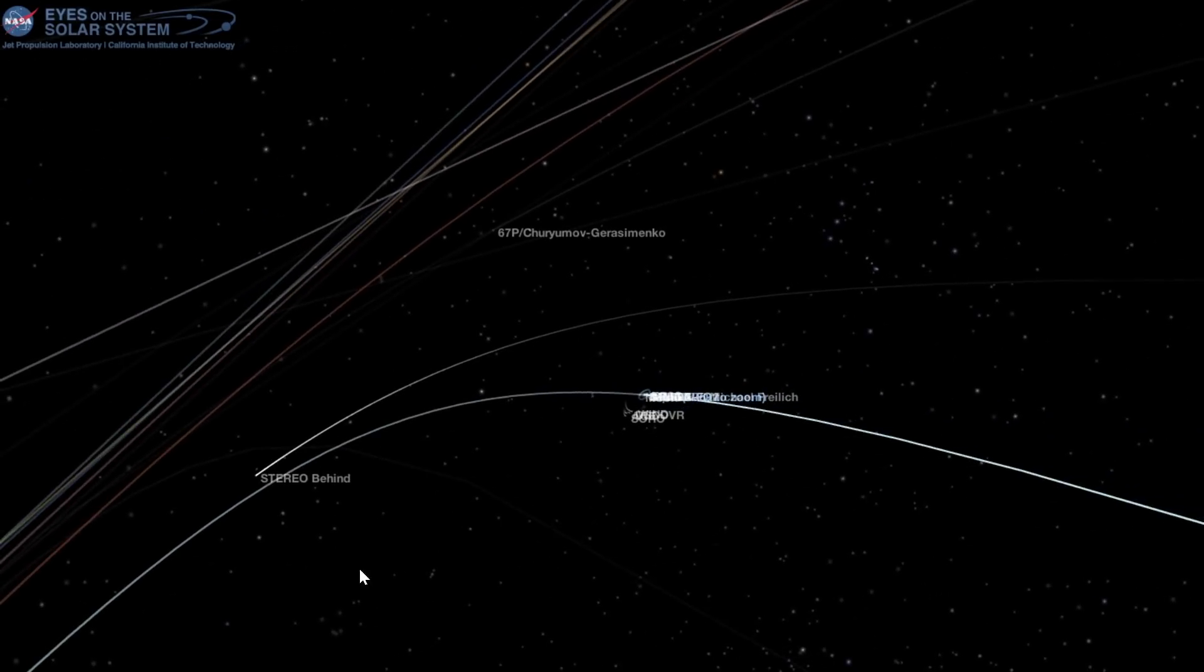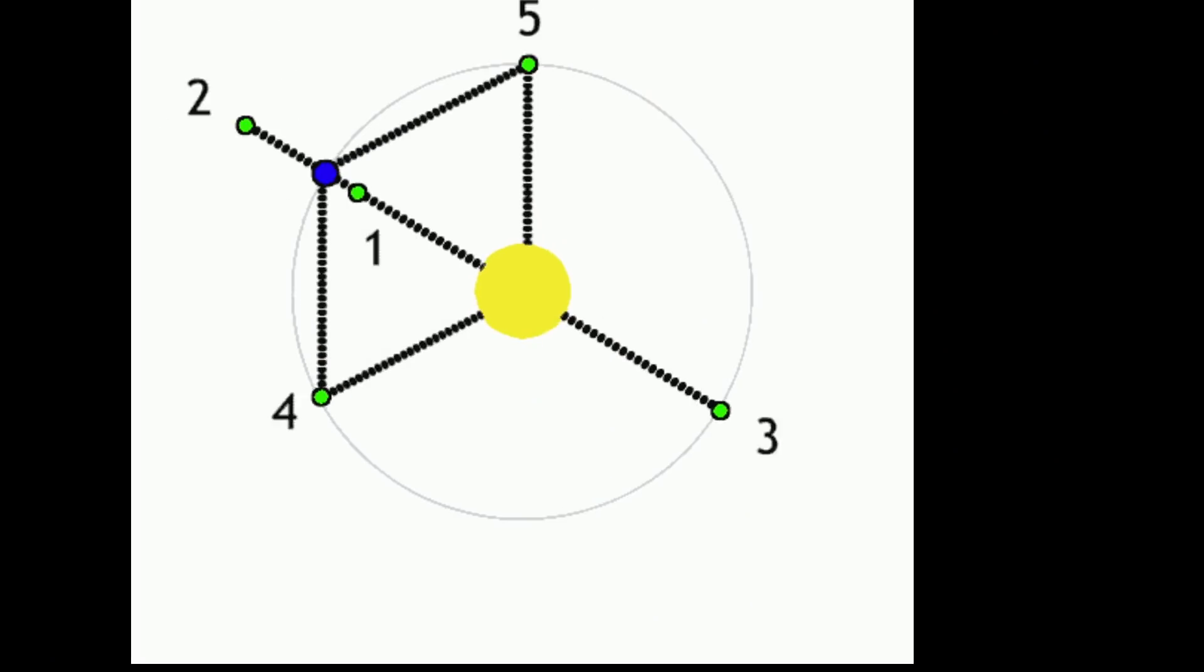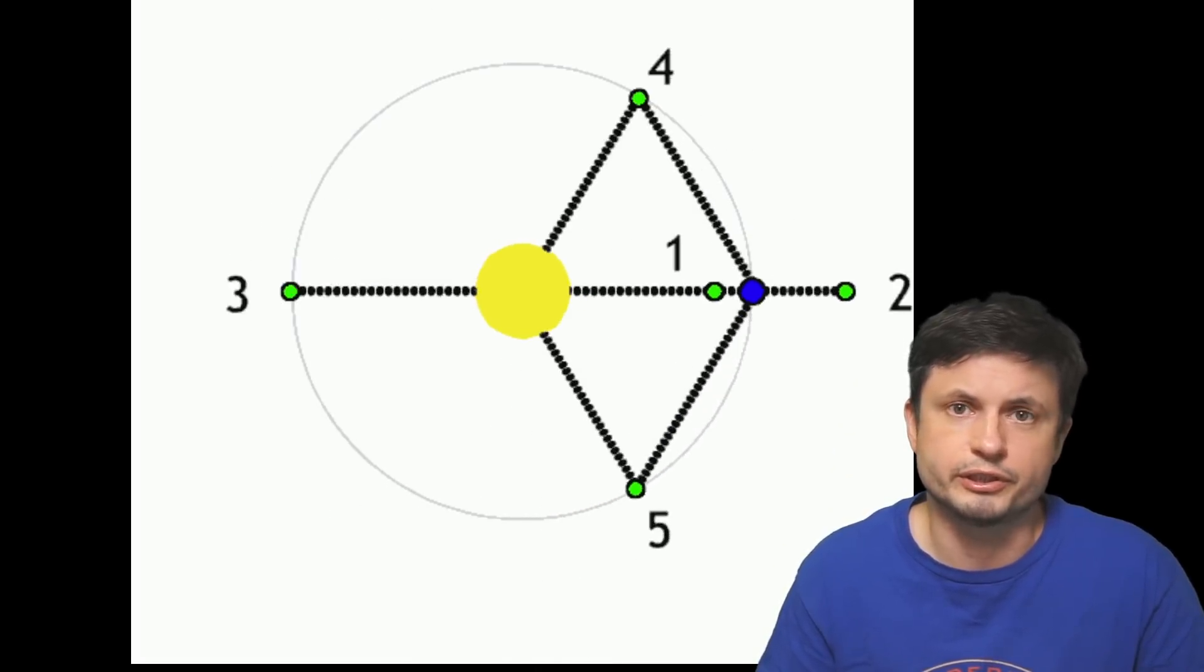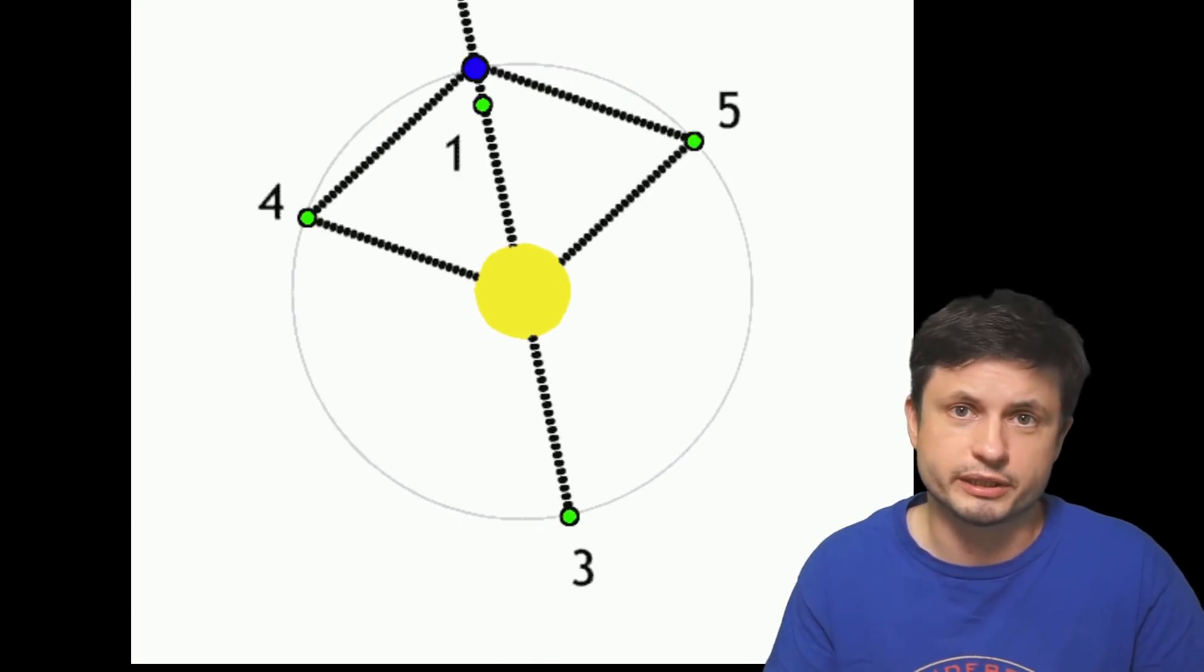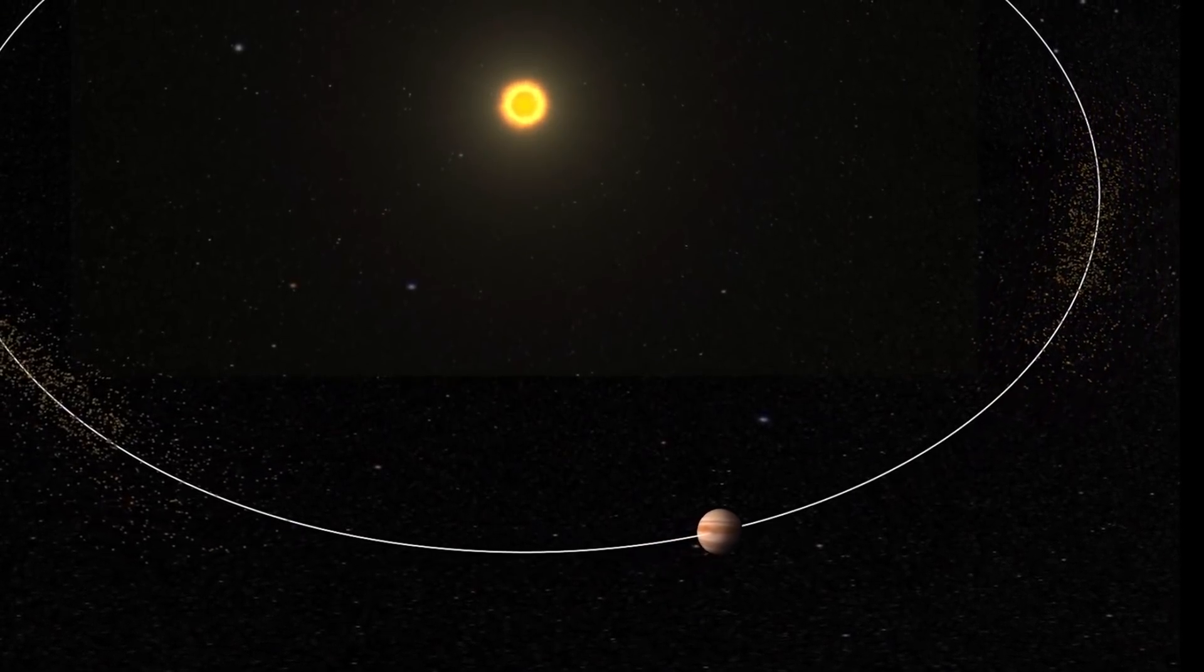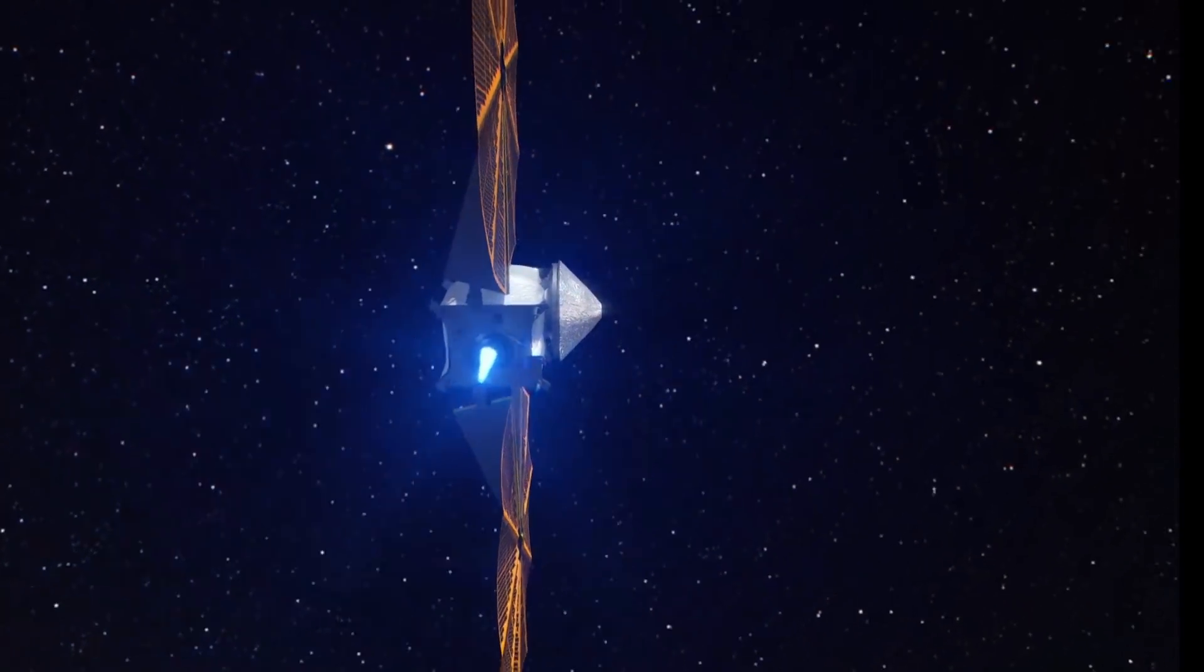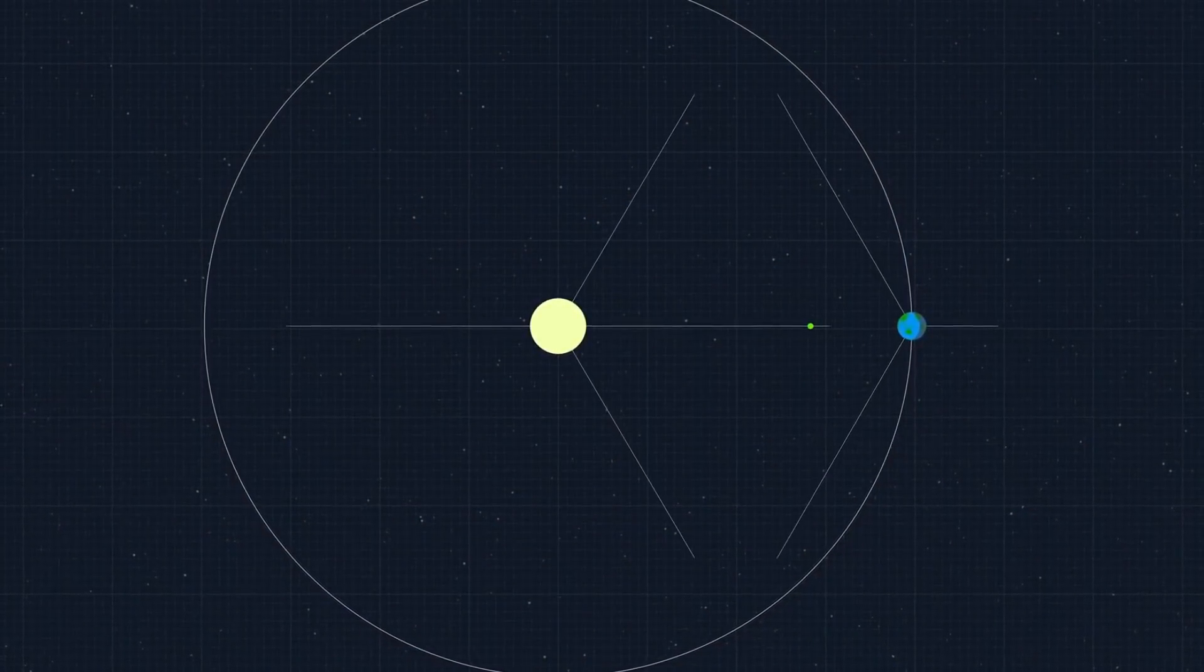We also have one satellite known as STEREO Behind right there, and STEREO Ahead right there. And these are in the Lagrange 4 and Lagrange 5 points, and they're essentially used to study various interactions of the Sun. But since Jupiter is the most massive object in the solar system, other than of course the Sun, it's naturally going to have the largest Lagrange collections as well. And this is what Lucy is going to try to investigate, which will hopefully lead to some answers about the origins of the solar system.